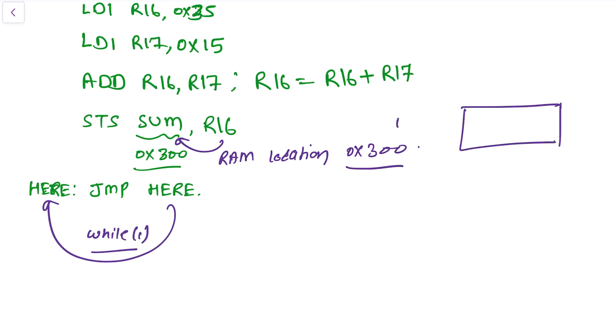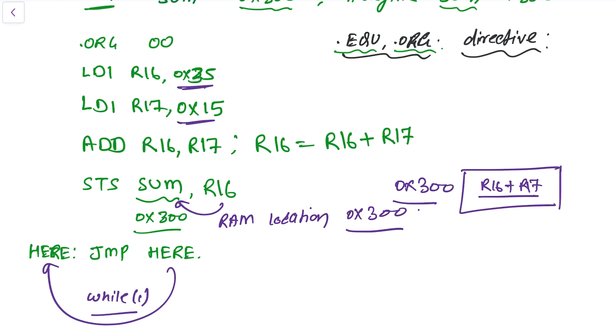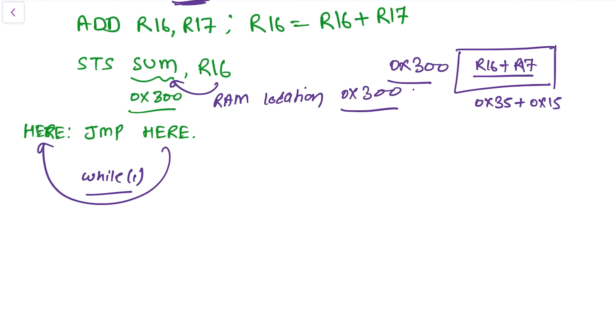So the RAM location 0x300 will be loaded with R16 plus R17, which we had here, these values. So the sum, that's 0x35 plus 0x15, this will be stored at the RAM location of 0x300. Perfect.